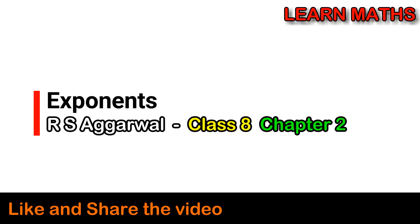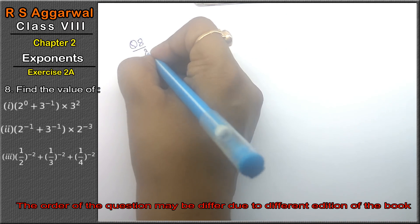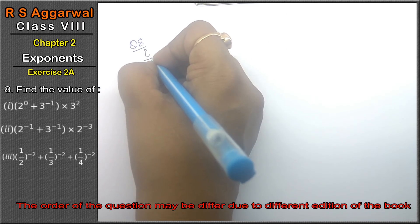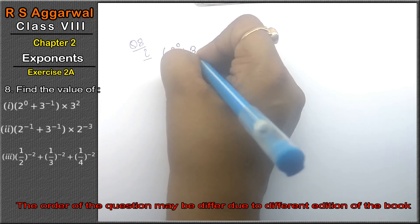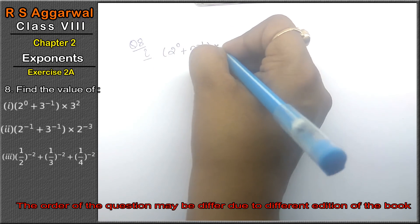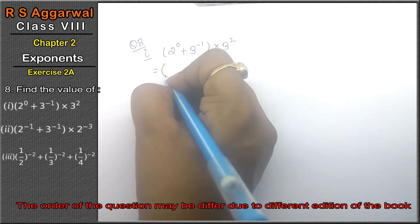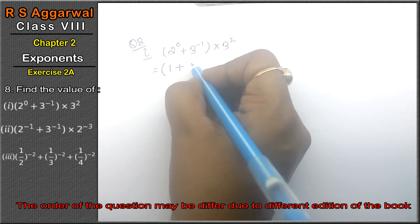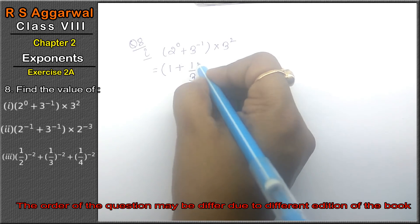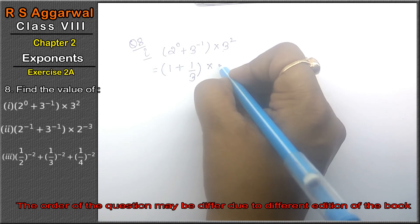Let's do question number 8th of exercise 2a, that is exponents. Question number 8th, first part: find the value of 2 ki power 0 plus 3 ki power minus 1 into 3 ki power 2. Friends, 2 ki power 0 ka matlab 1 hai. Plus 3 ki power minus 1 ka matlab 1 upon 3 hai. Into 3 ki power 2 ka matlab hai 3 into 3.